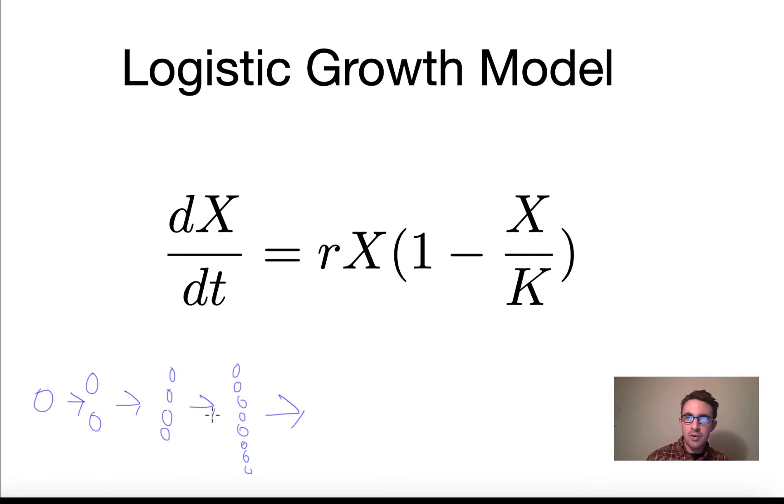The answer is that it would be something like this part of the equation here. So we have X. X is our, in this case, the number of cells, but in the general case, the number of whatever population you're interested in. And then we would have some growth parameter here, R.